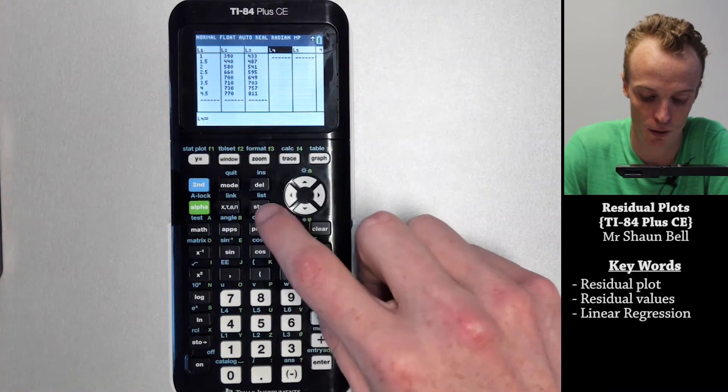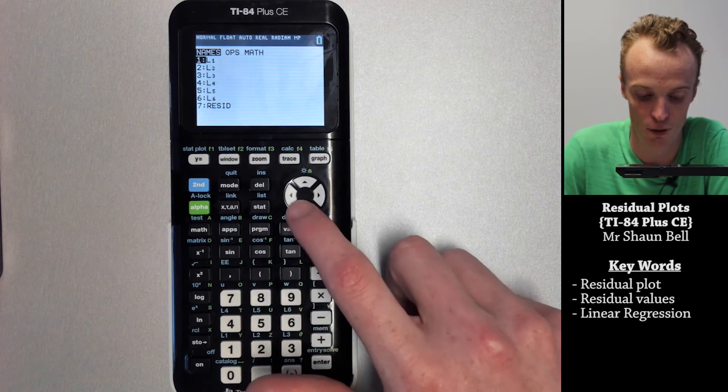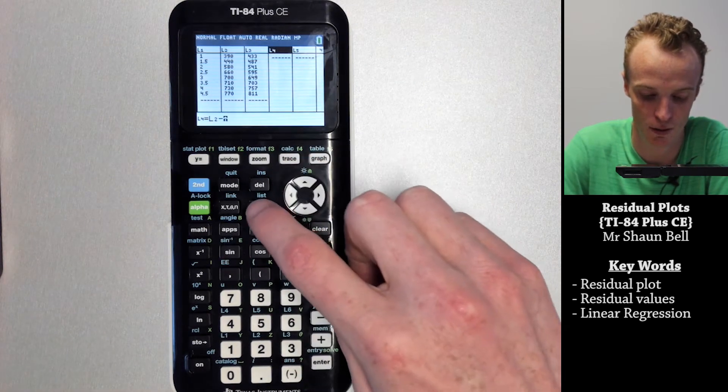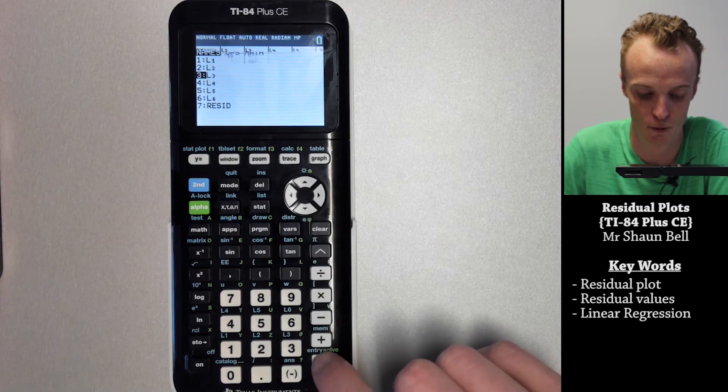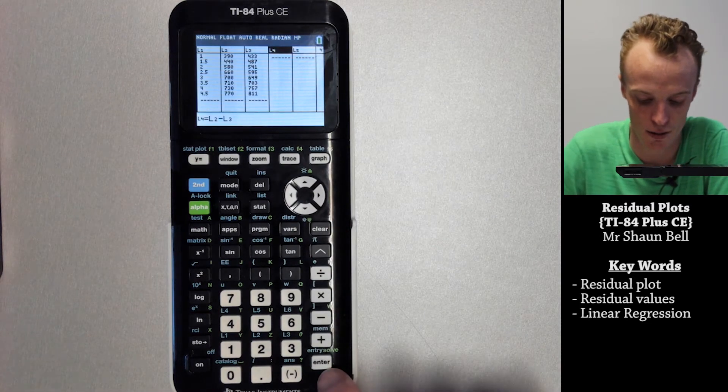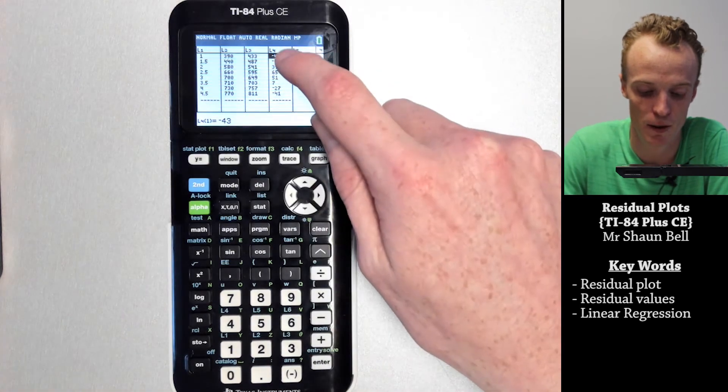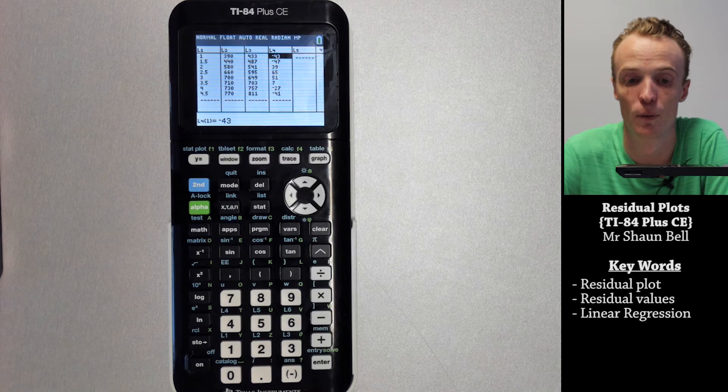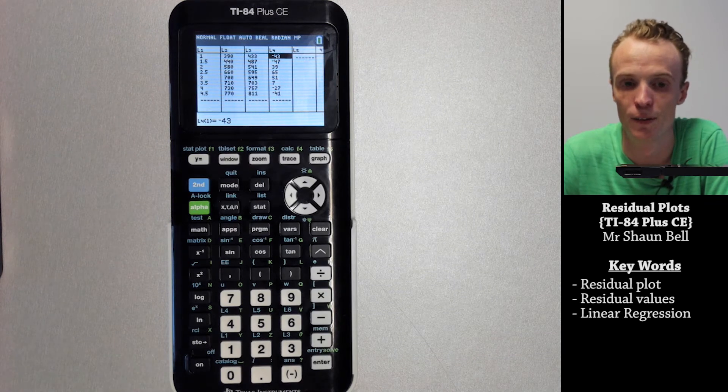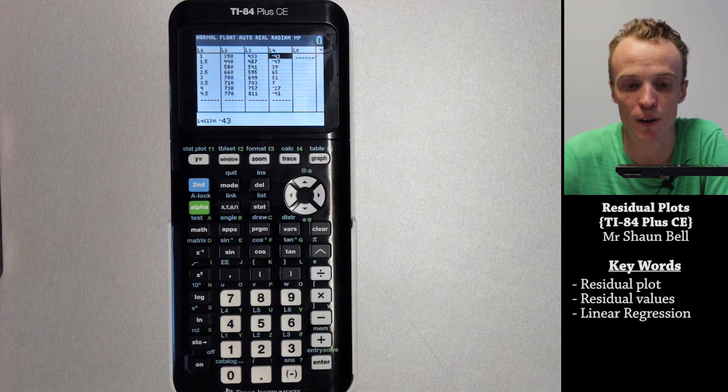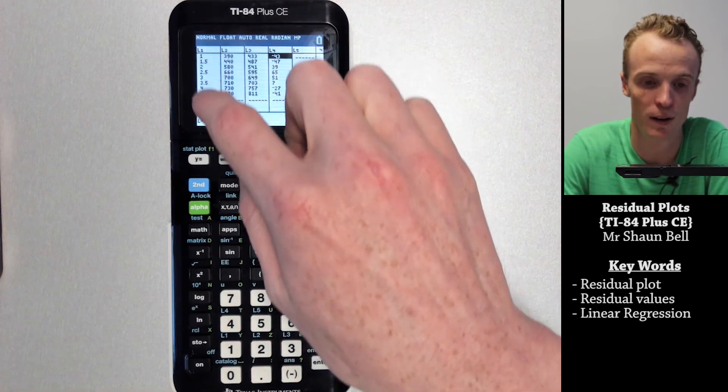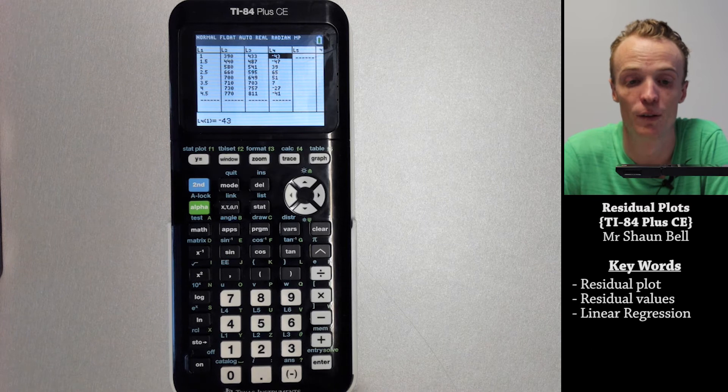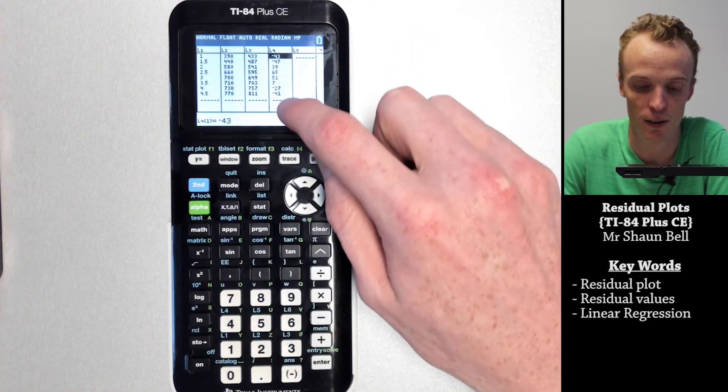So that second stat button and go to list two subtract list three, then I simply hit enter and it will give me my residual values now presented in list four. Now to graph this I need to graph my x values which are in list one with my y values which are my residual values in list four.